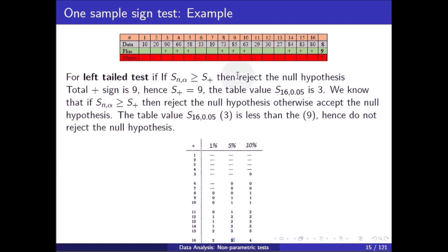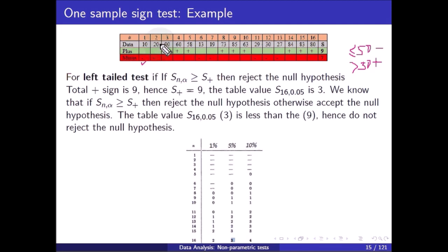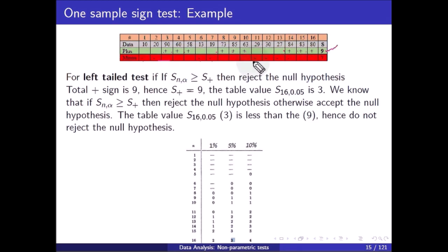Now we create the sign table. If the value is less than or equal to 50 we put a minus sign, and if it is more than 50 we put a plus sign. So: 10 is less than or equal to 50 — minus; 20 is less than or equal to 50 — minus; 90 is more than 50 — plus; 60 is more than 50 — plus; 58 is more than 50 — plus; and so on. Counting the plus signs: 1, 2, 3, 4, 5, 6, 7, 8, 9 — total 9 plus signs. Counting the minus signs: 1, 2, 3, 4, 5, 6, 7 — total 7 minus signs.